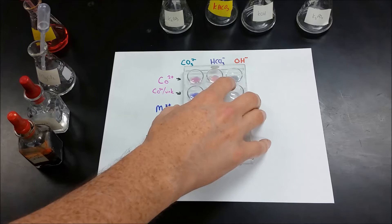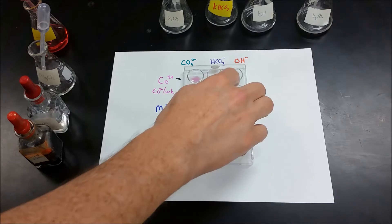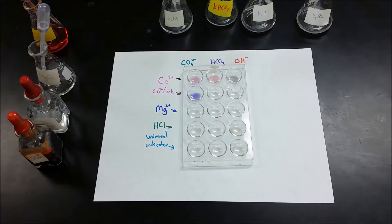So the hydroxide gives a certain color precipitate. Our unknown is different from that, and it's also different from the bicarbonate and the carbonate.